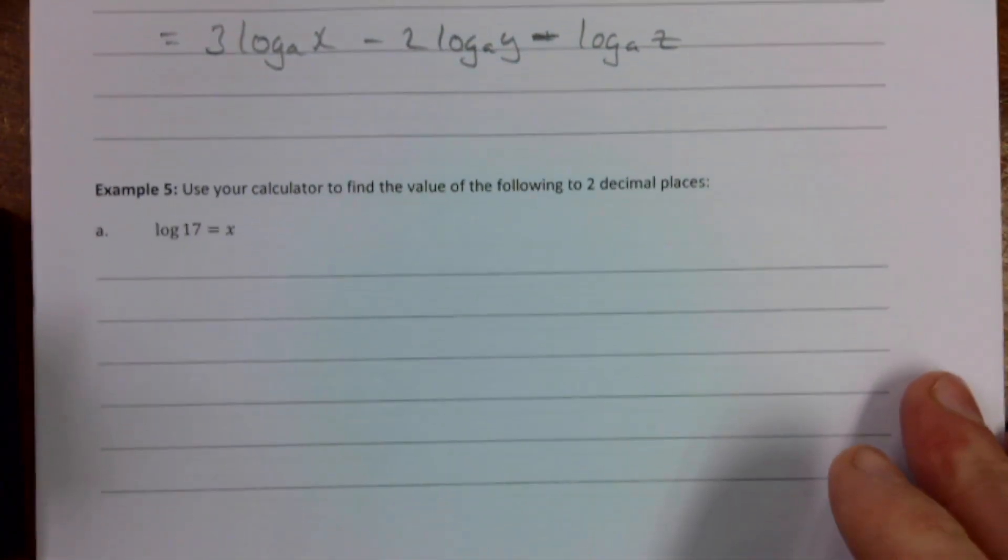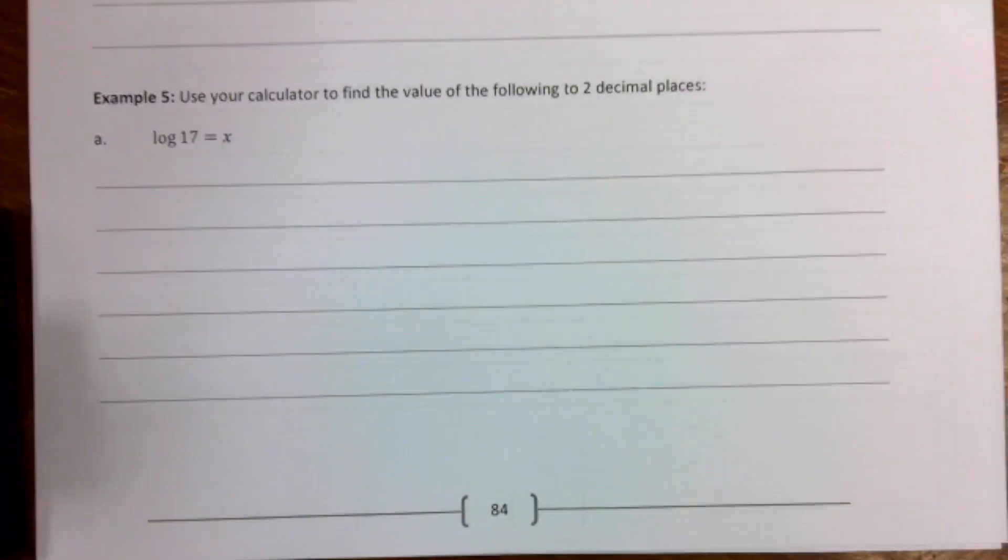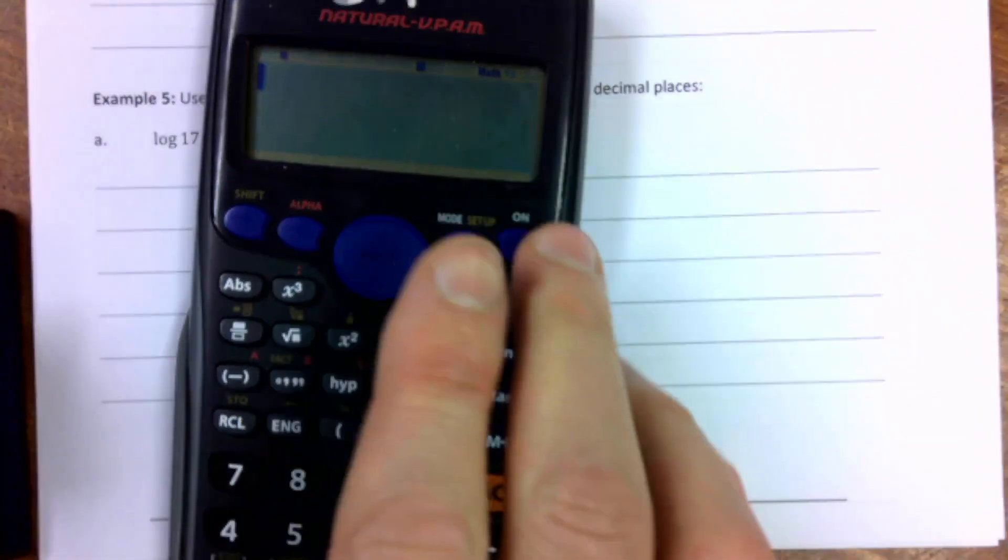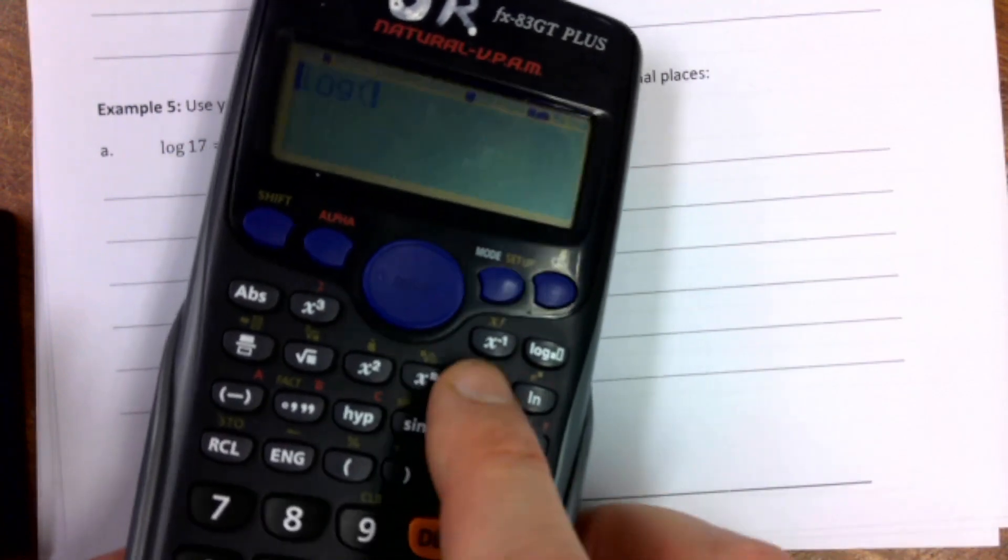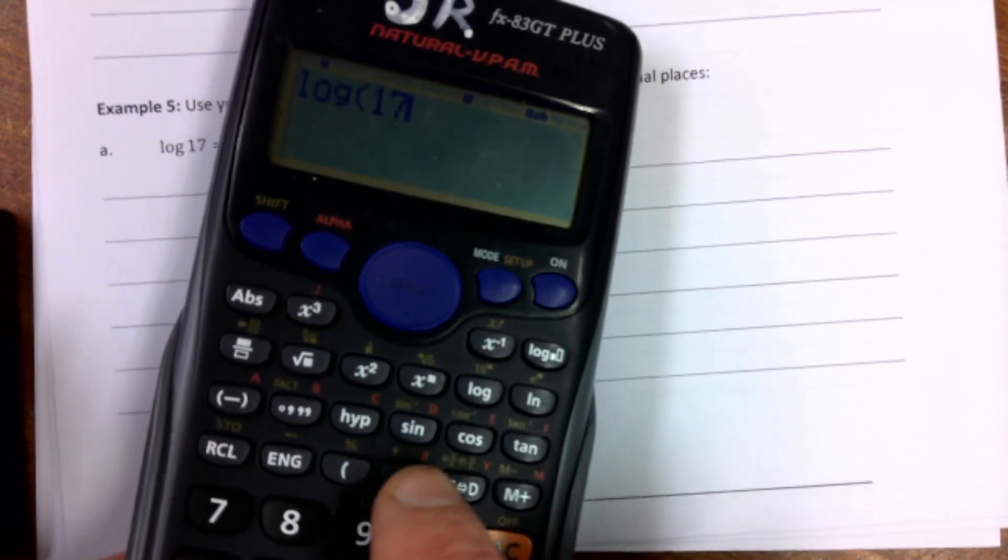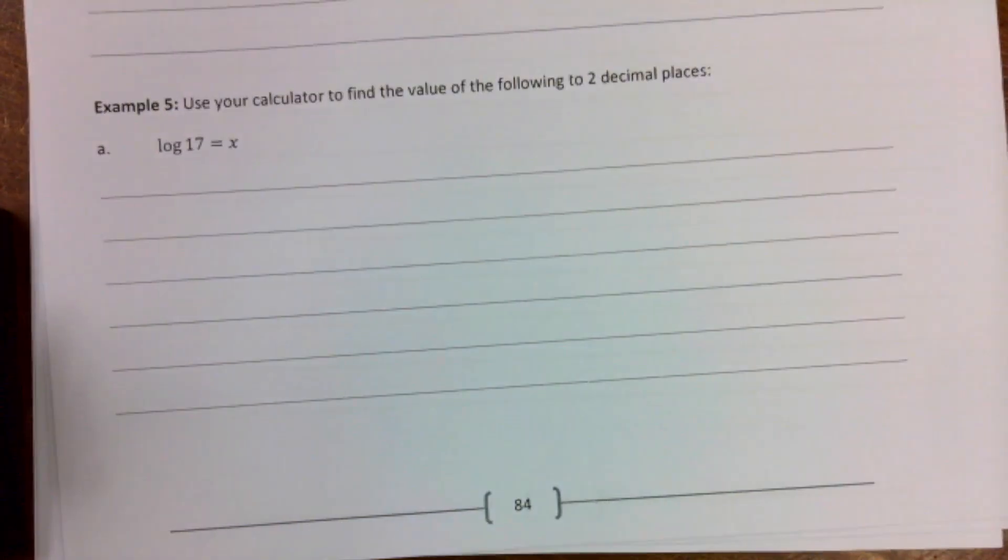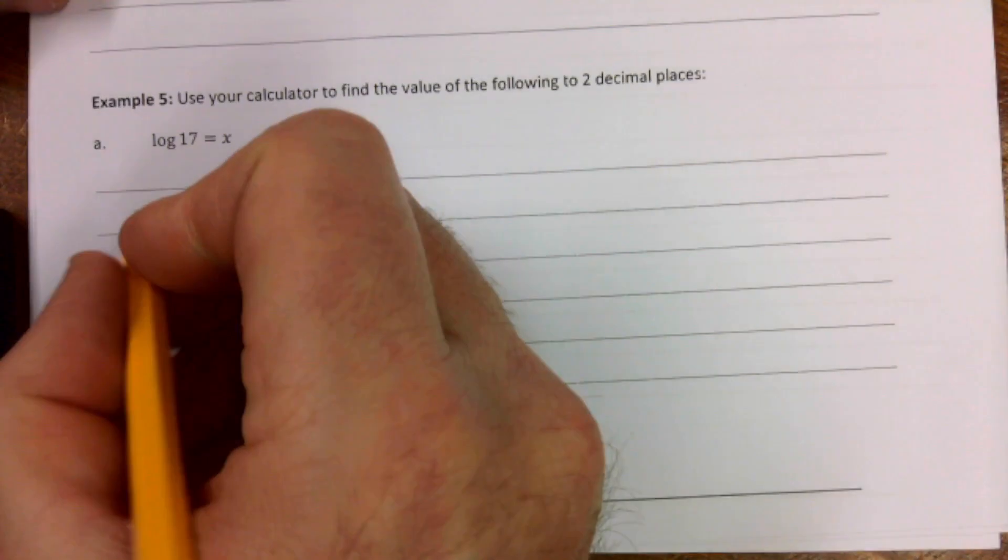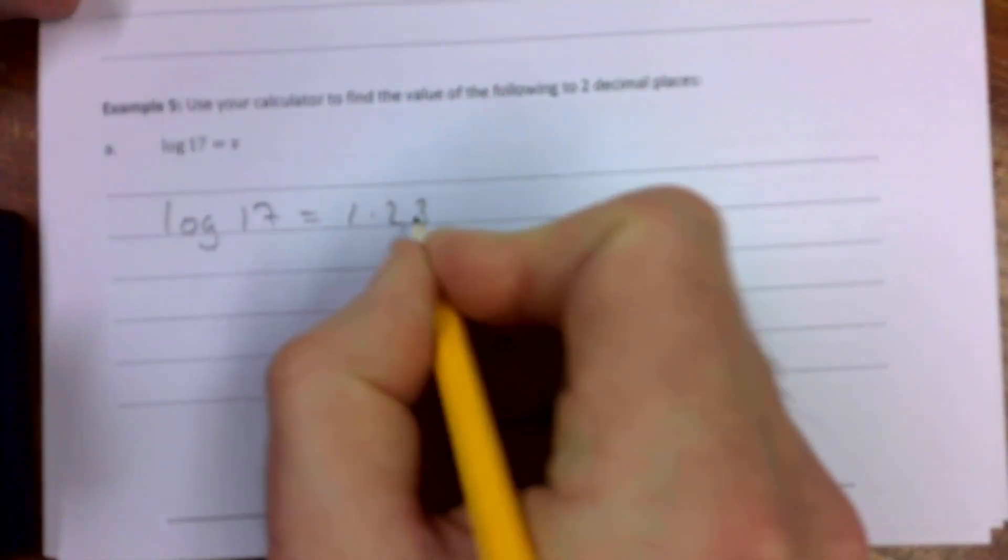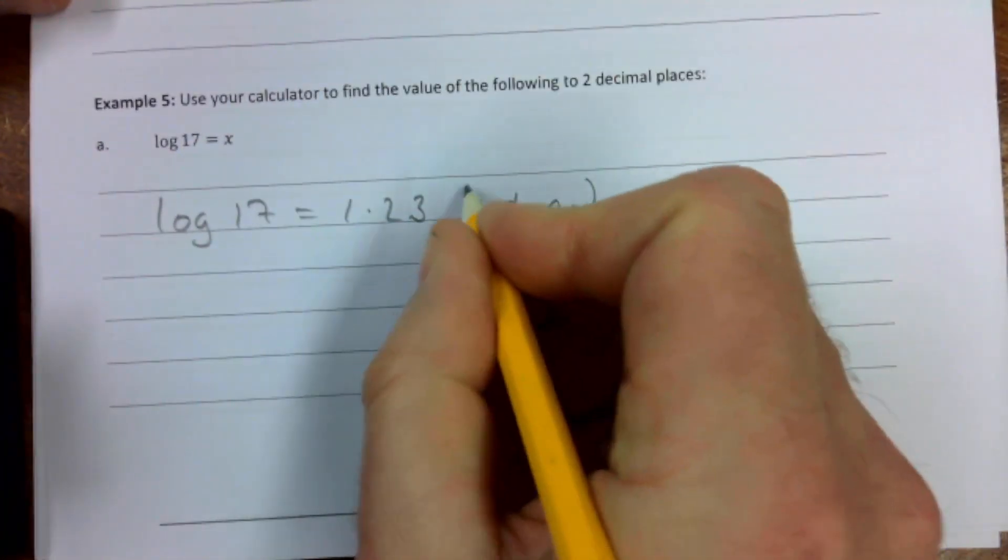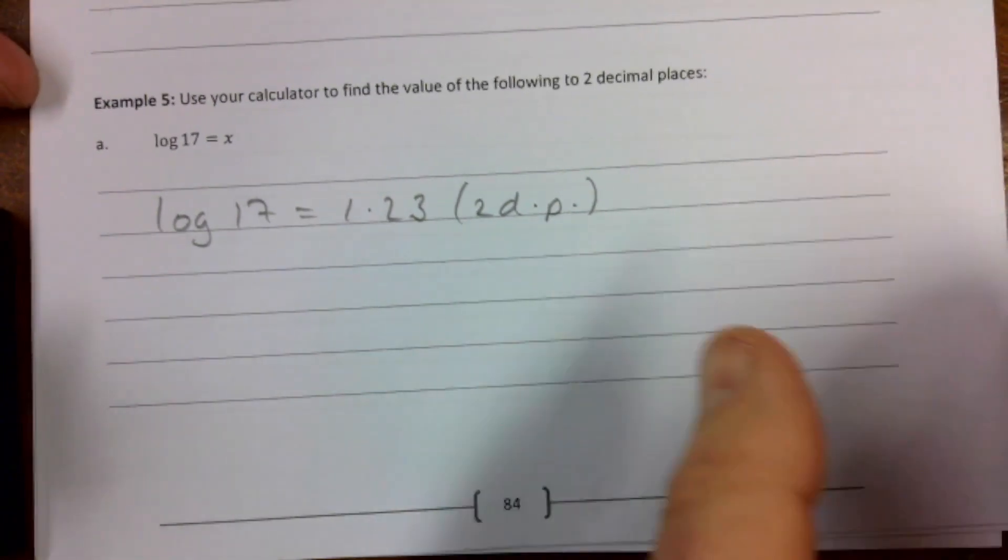Use your calculator to find the following to 2 decimal places. So if I calculate it on here, and again, hopefully you can see it, it's hard to get the screen to come up. That's okay there, I think. So if I go log 17, and it equals, that gives me then 1.23. And as I said, then that's the 2 decimal places.